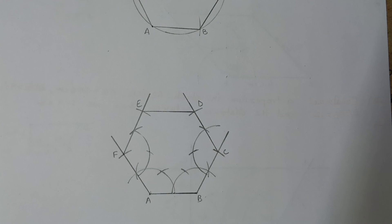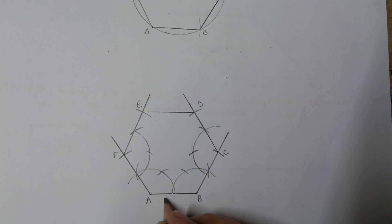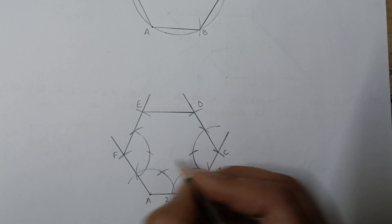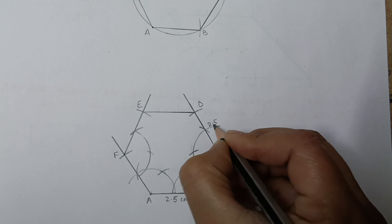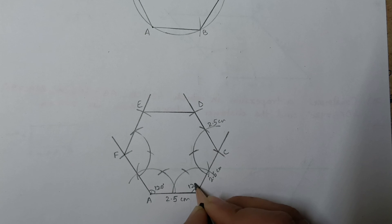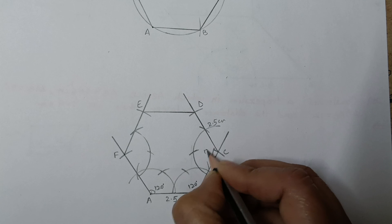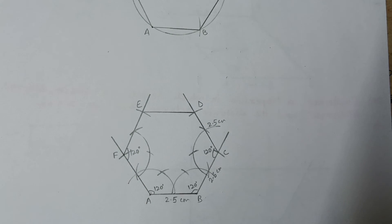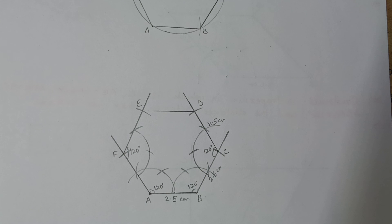This is how we get a regular hexagon using the angle method. Write the measurements: each side is 2.5 centimeter and each interior angle is 120 degrees. This exercise is complete. Hope you understood all these questions — keep on practicing. Thank you for watching this video.